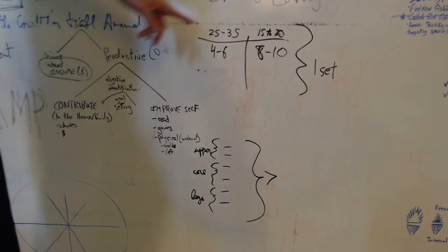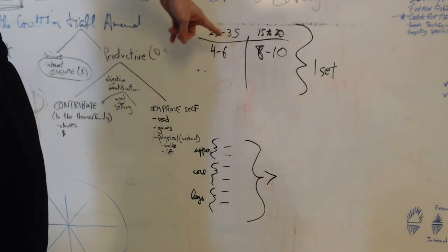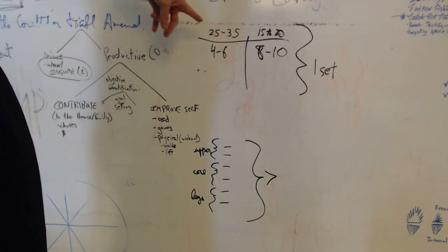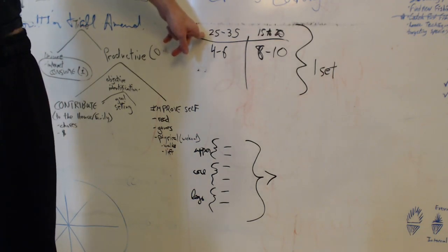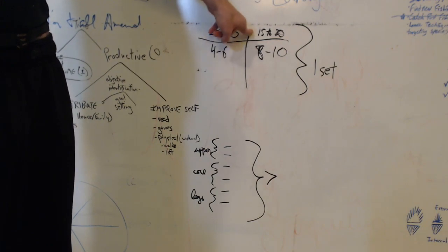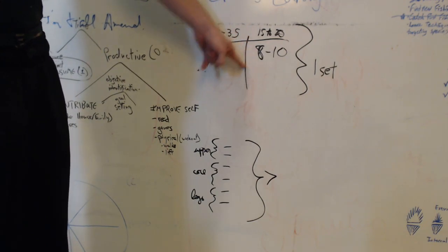Okay, so this I think is weightlifting related. I don't know what exercise this was, but I would guess this is 25 to 35 pounds, 4 to 6 reps, and 15 to 20 pounds, 8 to 10 reps.